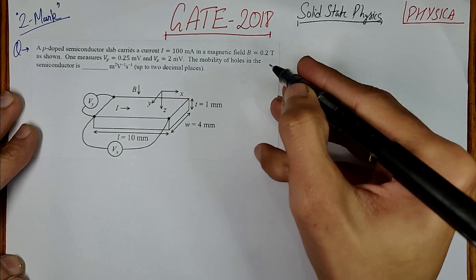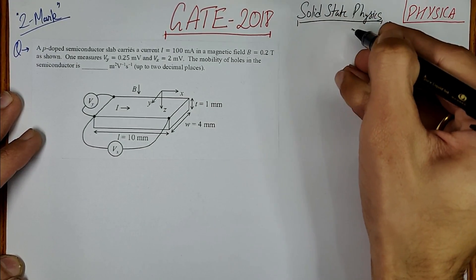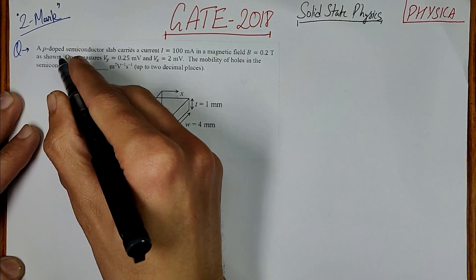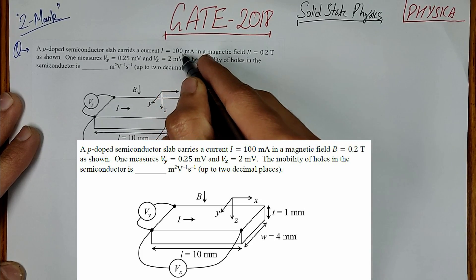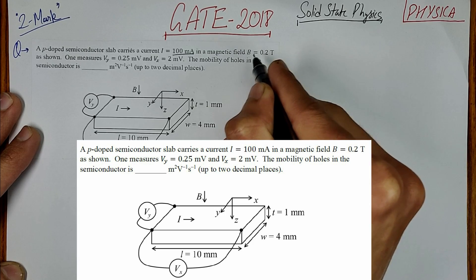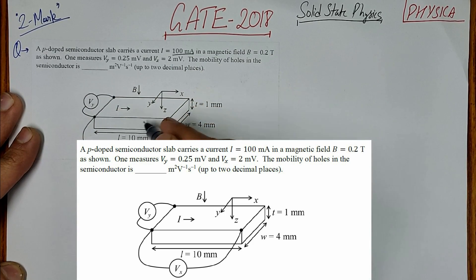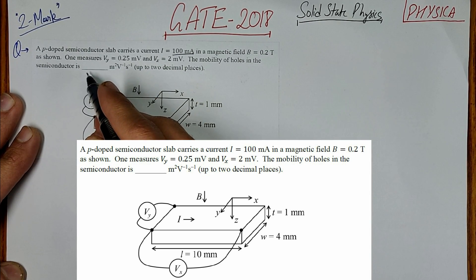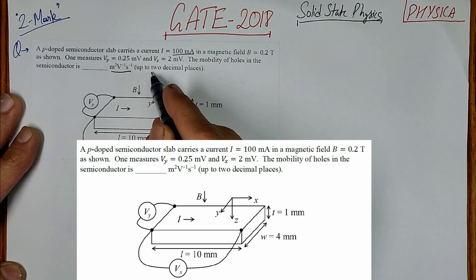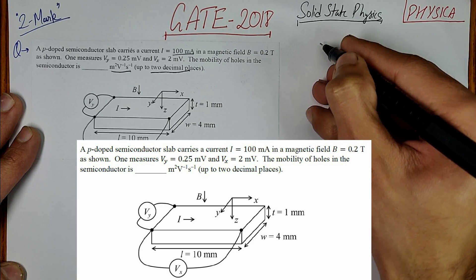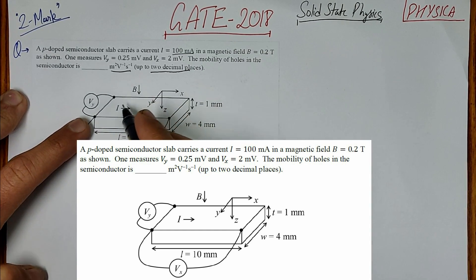Welcome everyone. In this video I will solve a solid state physics question from GATE 2018, worth two marks. The question is: a p-type semiconductor slab carries a current I equal to 100 milliamps in a magnetic field B of 0.2 tesla. One measures Vy = 0.25 millivolts and Vx = 2 millivolts. We need to find the mobility of holes in the semiconductor up to two decimal places.